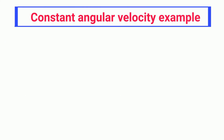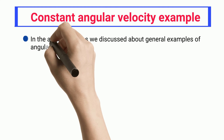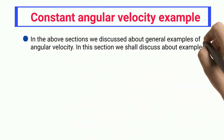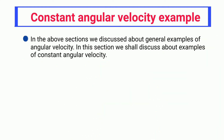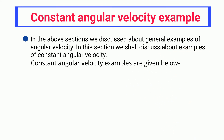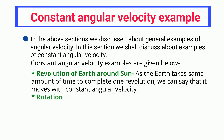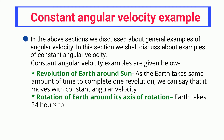Constant angular velocity examples: in addition to the general examples discussed above, let us now discuss specific examples of constant angular velocity. Revolution of Earth around the Sun: since Earth takes the same amount of time to complete one revolution, we can say that it moves with constant angular velocity.